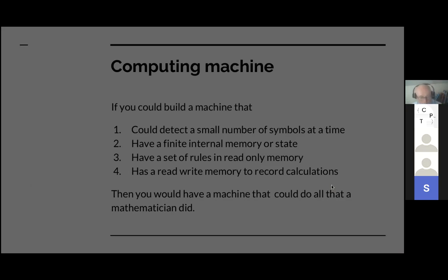So he reasoned that if, in principle, you could build a machine that could detect a small number of symbols at a time that could have a finite internal memory or state corresponding to the finite number of states of mind which he said any mathematician works with. And have a set of rules of thumb which he said you can write down. These rules of thumb in a table in the read only memory of this machine. And finally, the machine must have something equivalent to the pencil and paper, which is a read write memory to record the calculations as they go along. Now, he argued that if you had such a machine, it could do all that a mathematician could do.